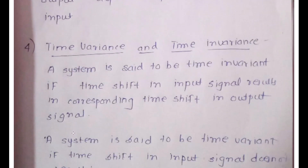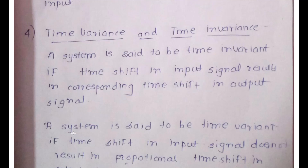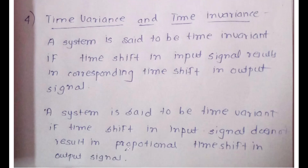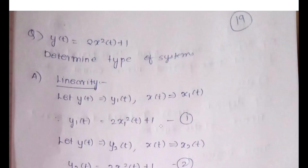For time variant and time invariant systems: a system is said to be time invariant if a time shift in the input signal results in a corresponding time shift in the output signal. A system is said to be time variant if the time shift in the input does not result in a proportional time shift in the output. That is very important, and solving a numerical will make it clearer.